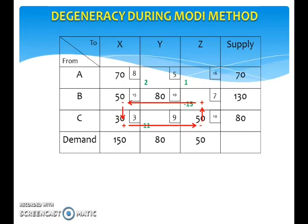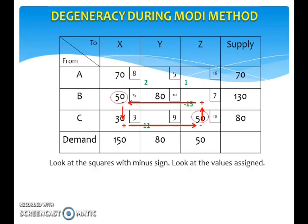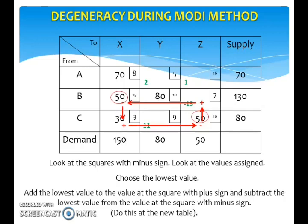Next, we need to look at the loop. Look at the squares with a minus sign, look at the values assigned, and choose the lowest value. The value assigned to both squares with a minus sign is 50. So add 50 to the value at the square with a plus sign and subtract 50 from the value at the square with a minus sign.